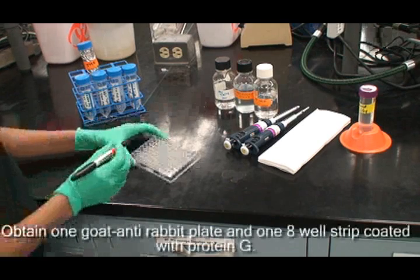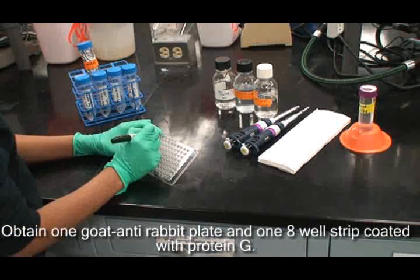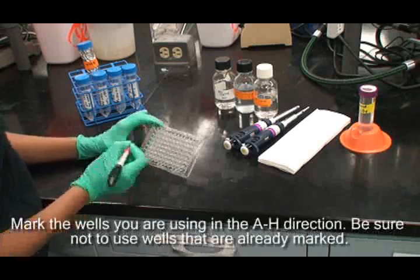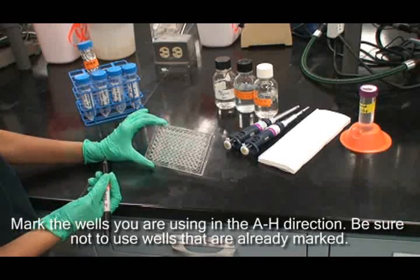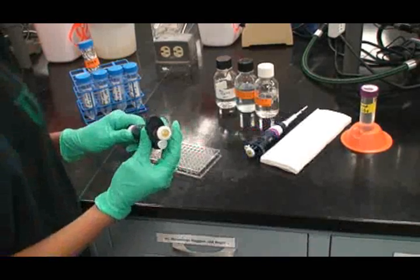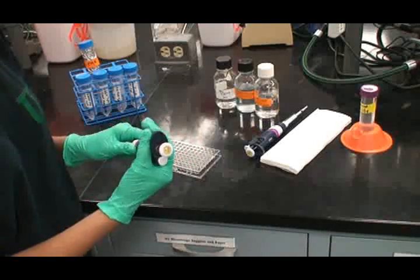Obtain one goat anti-rabbit plate and one 8-well strip coated with protein G. Mark the wells that you will be using in the A-H direction. Be sure not to use wells that are already marked.